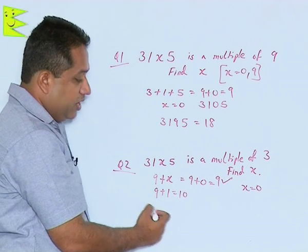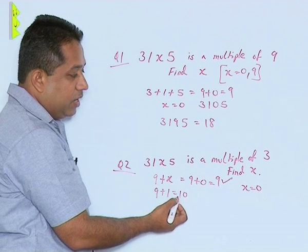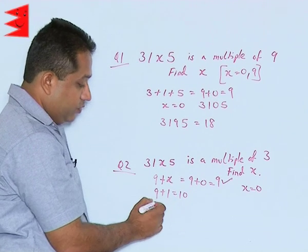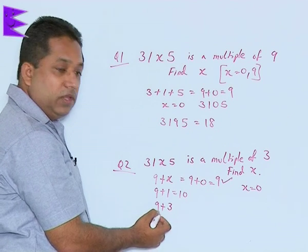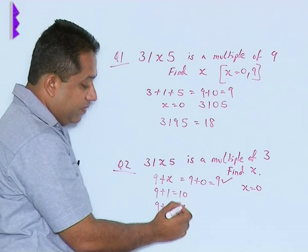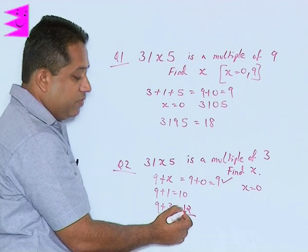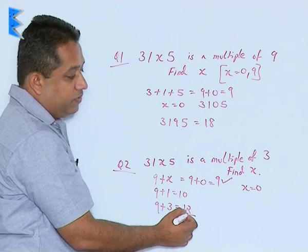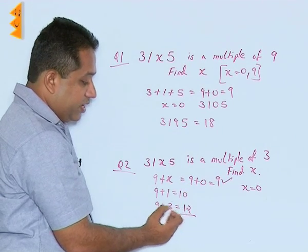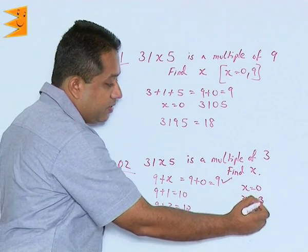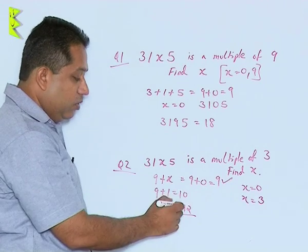We can't take it as 2. So the next value which will be a multiple will be 12. So which means that I have to add 3 more to 9. If I add 3 more to 9 then we will get 12 and we know that 3 fours are 12. So 12 is a multiple of 3. So another value of x could be 3 but is that the only value?